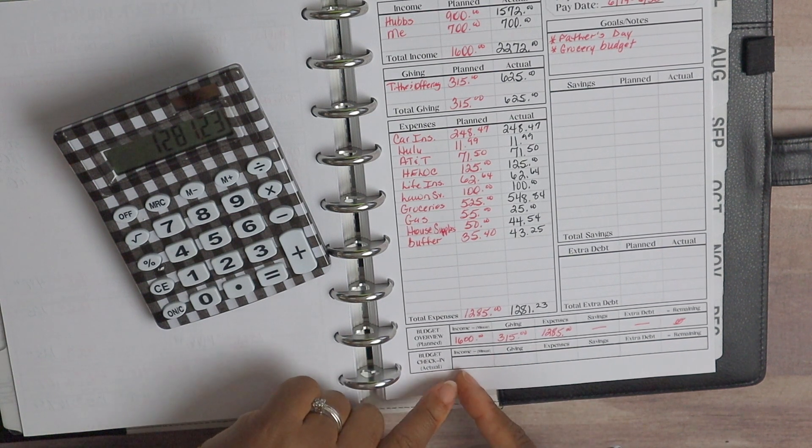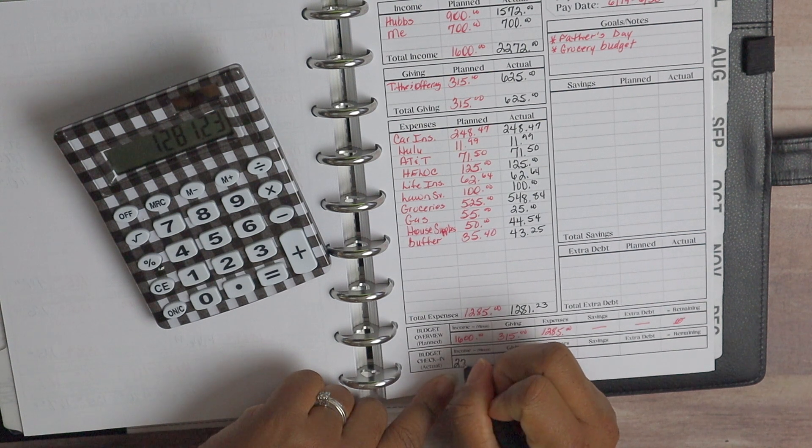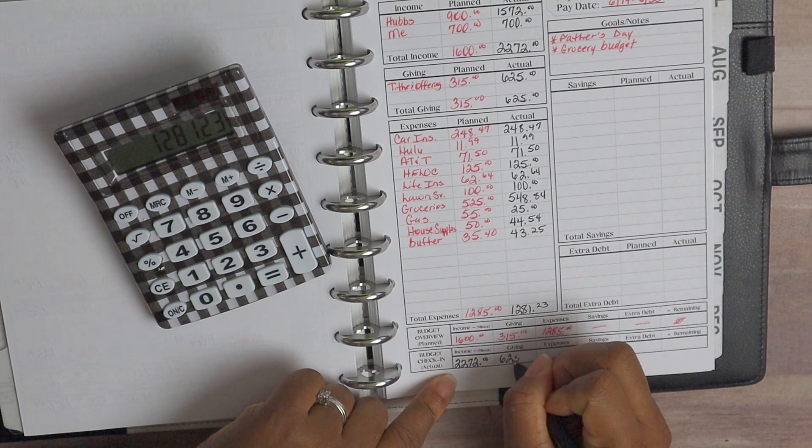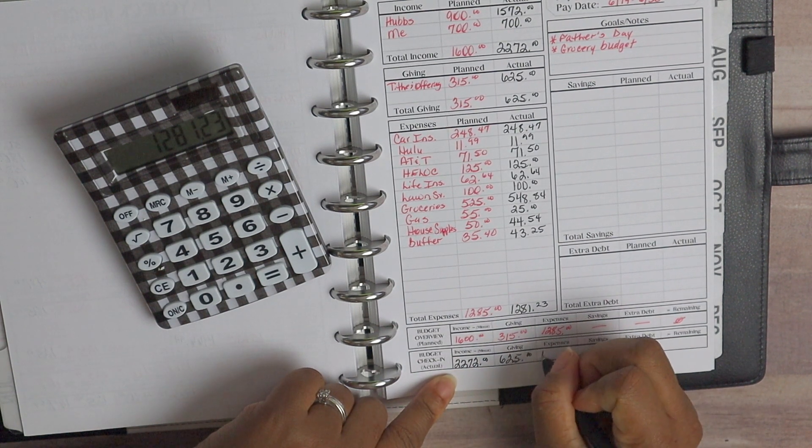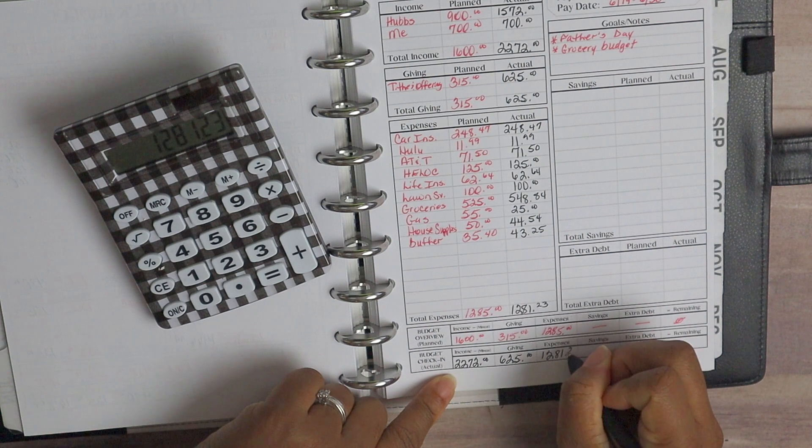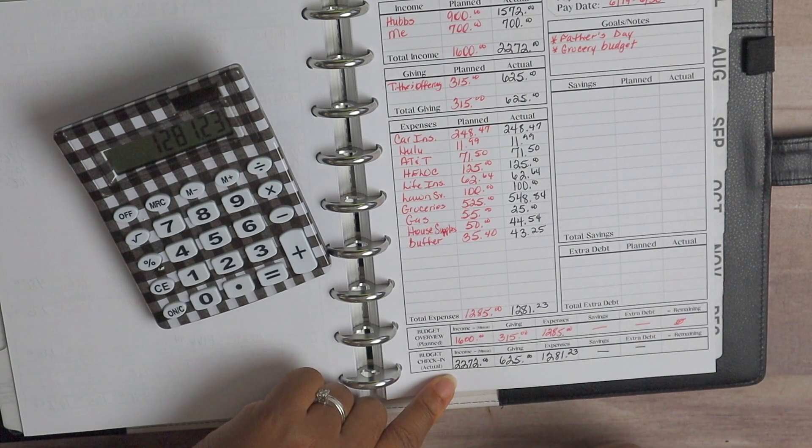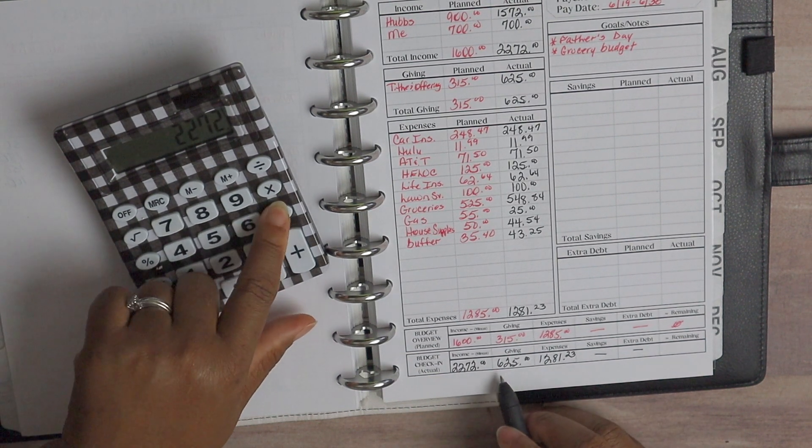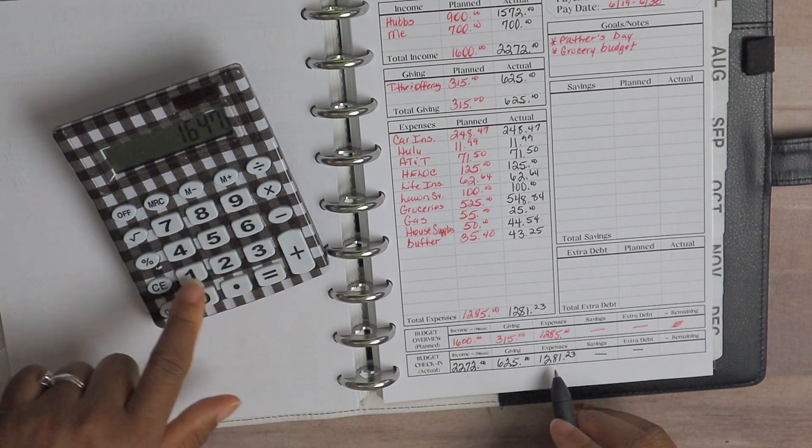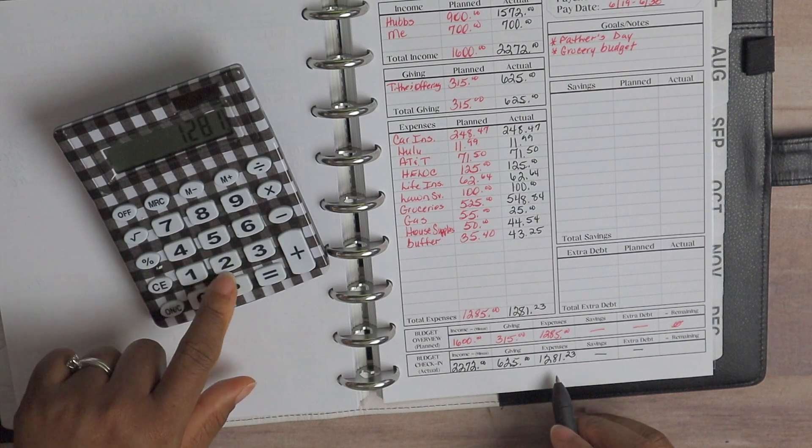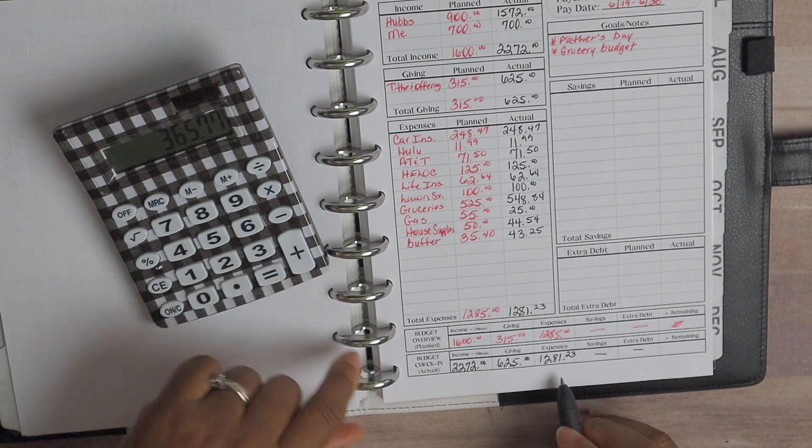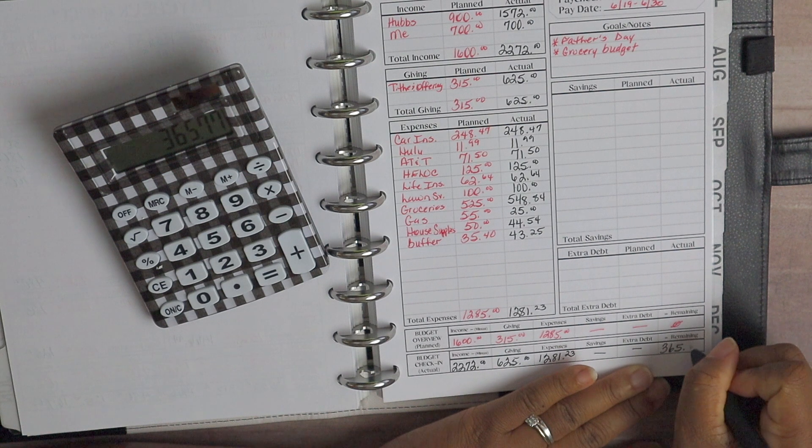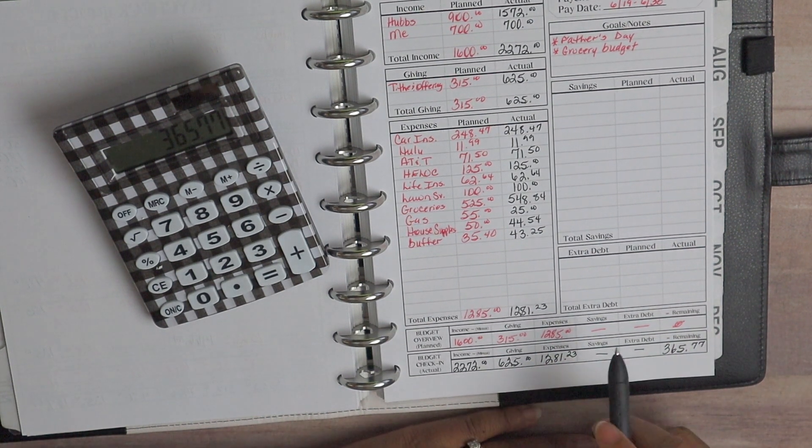So our income is at $2,272 and our giving is at $625 and our expenses at $1,281.23 and nothing for savings and extra debt. So $2,272 minus $625 minus $1,281.23, so that leaves us with $365.77 remaining for paycheck budget two, which is awesome guys.